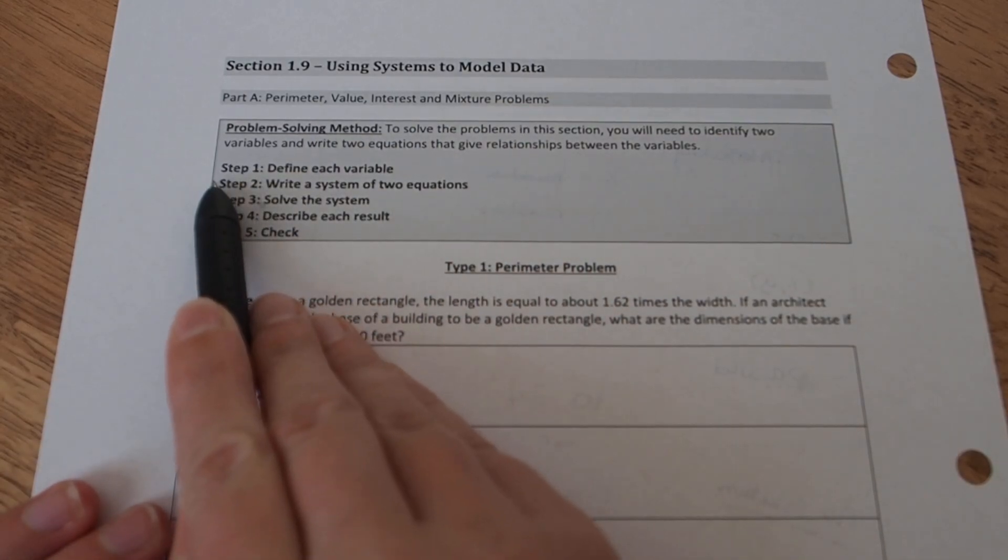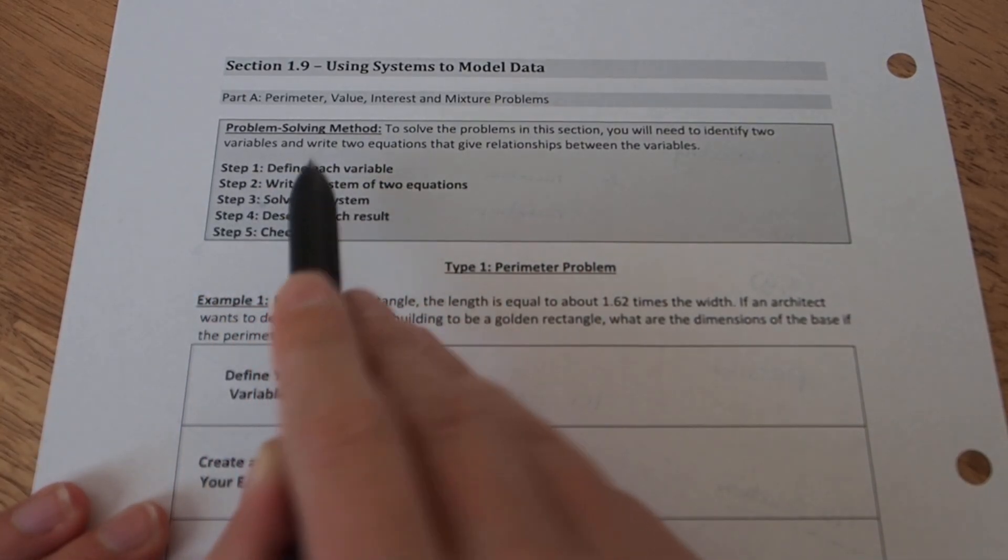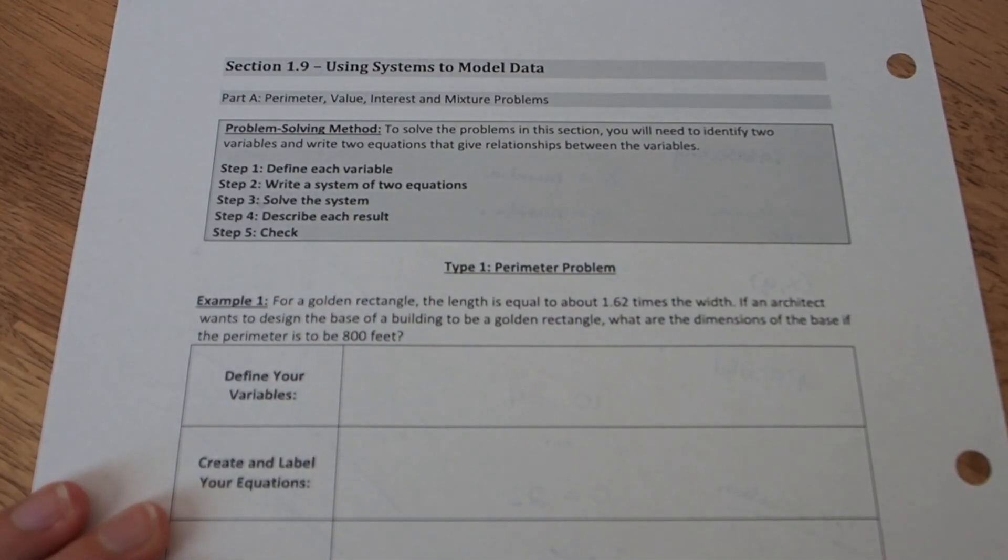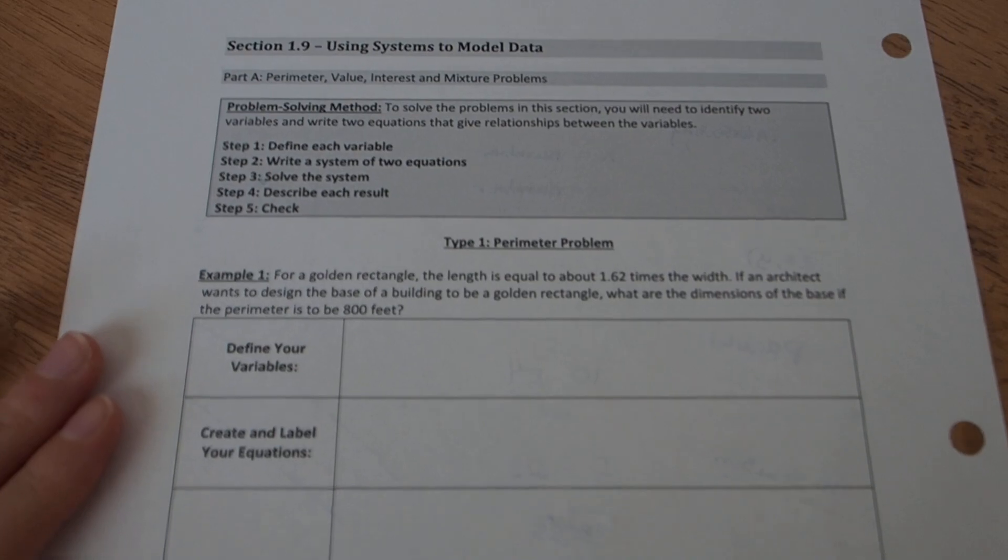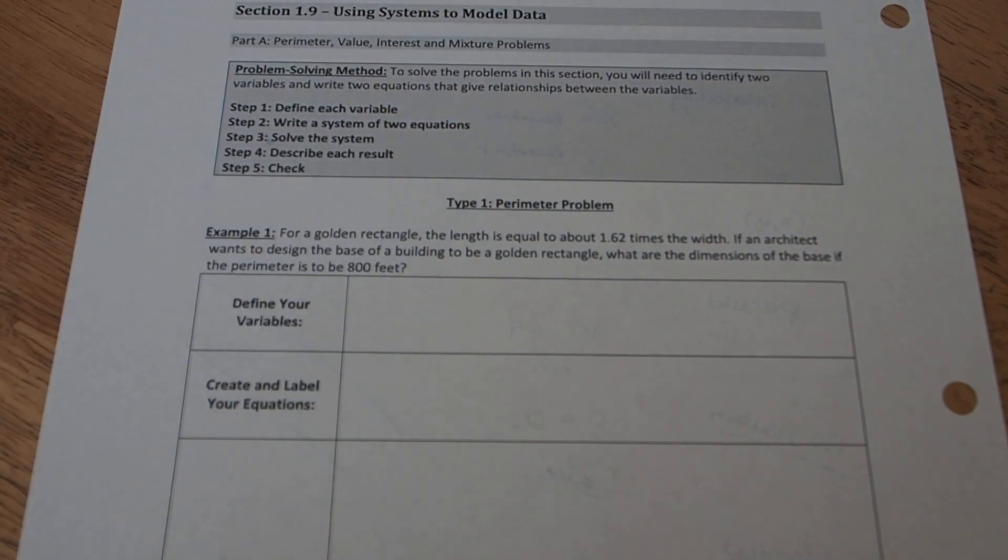The problem solving method first involves defining each variable, then writing a system of two linear equations, solving the system using substitution or elimination. Then we're going to describe the result, and optionally we can check each problem in our equations to make sure that the answer works in the equations and also makes sense in the problem.